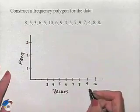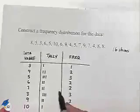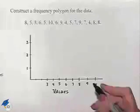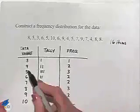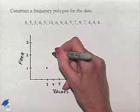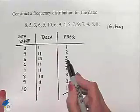Now for a frequency polygon, we're going to use ordered pairs. That is, we're going to plot the point 3, 1. And then we'll plot the point 4, 2. Plot the point 5, 3.